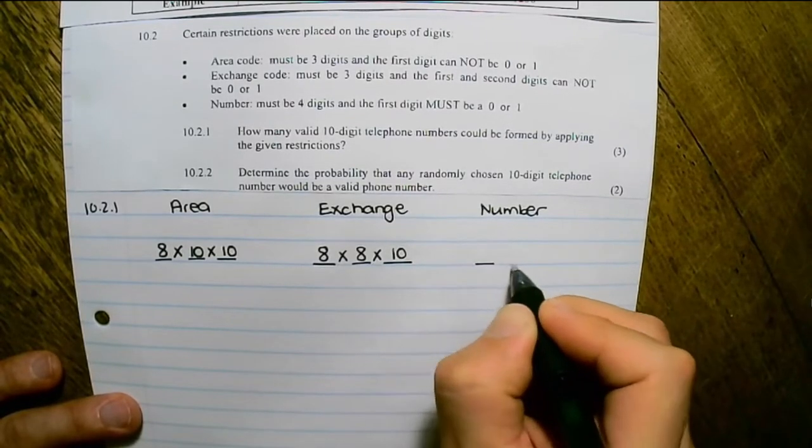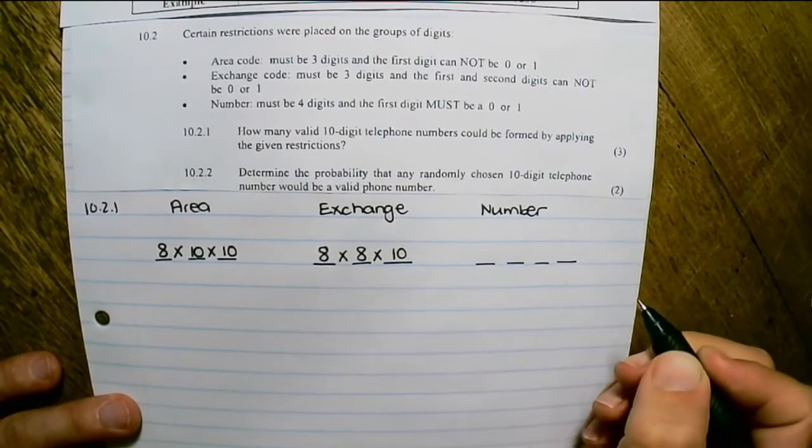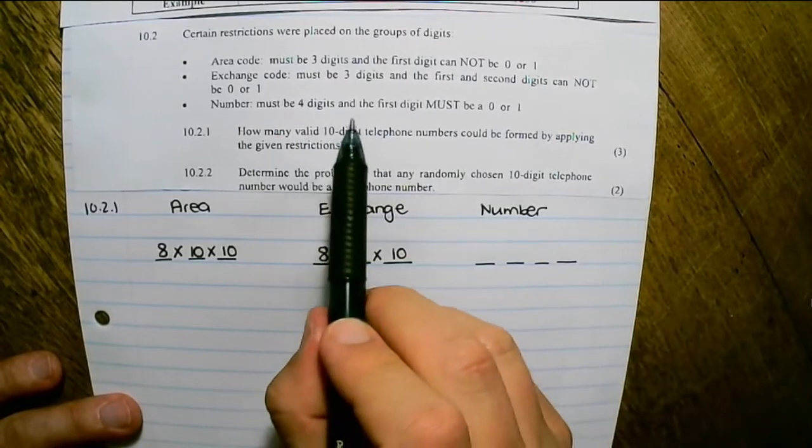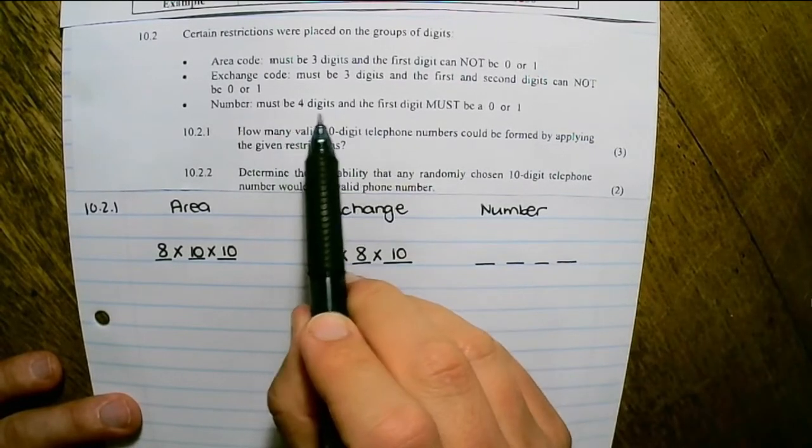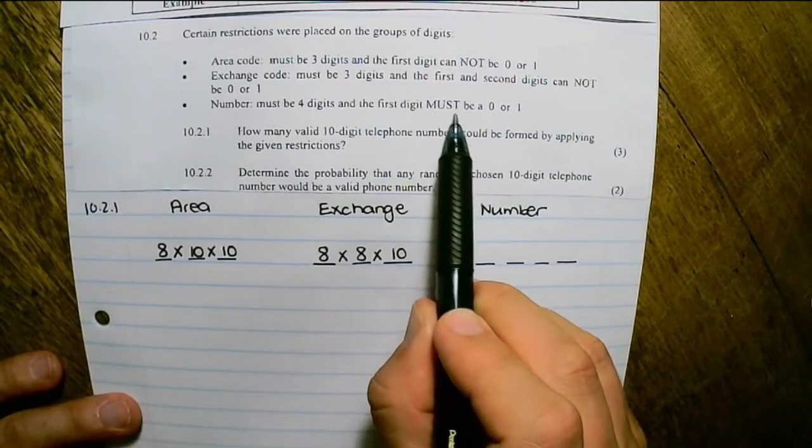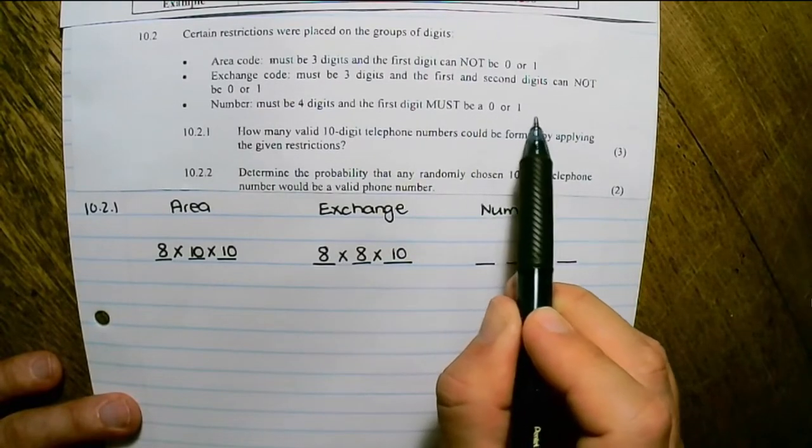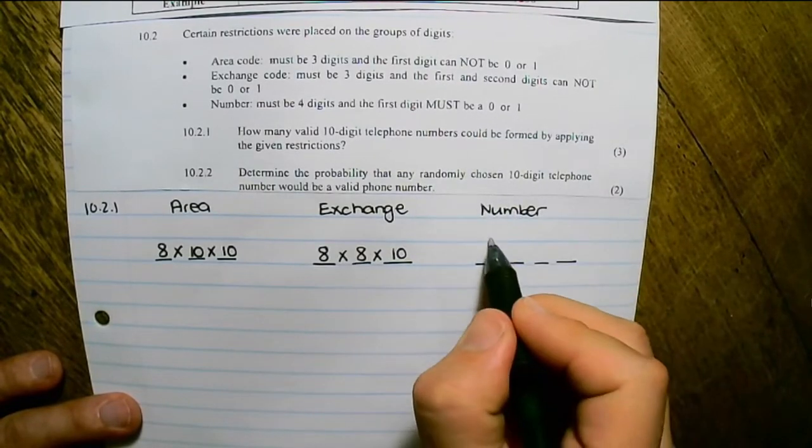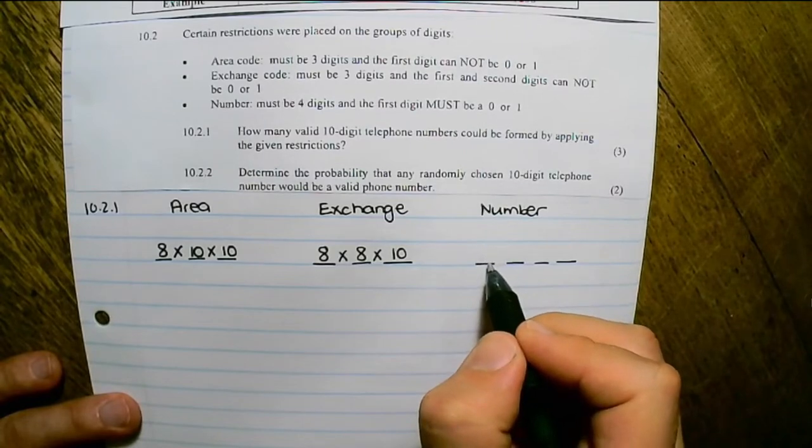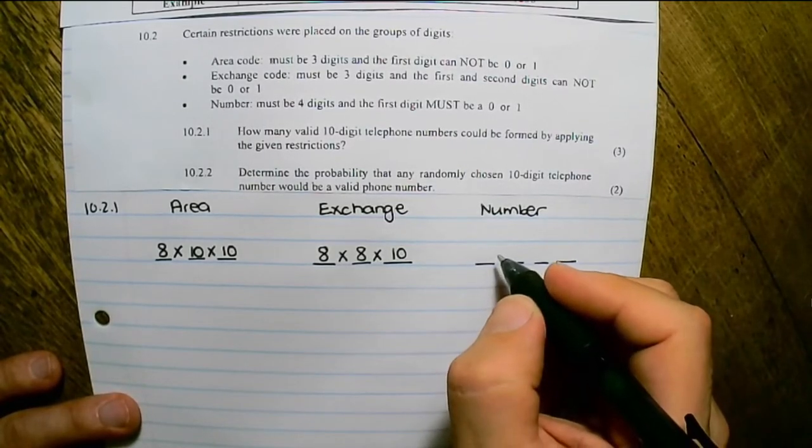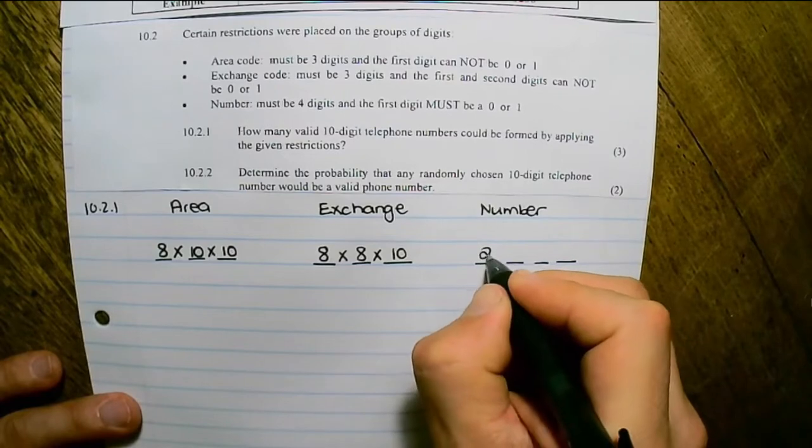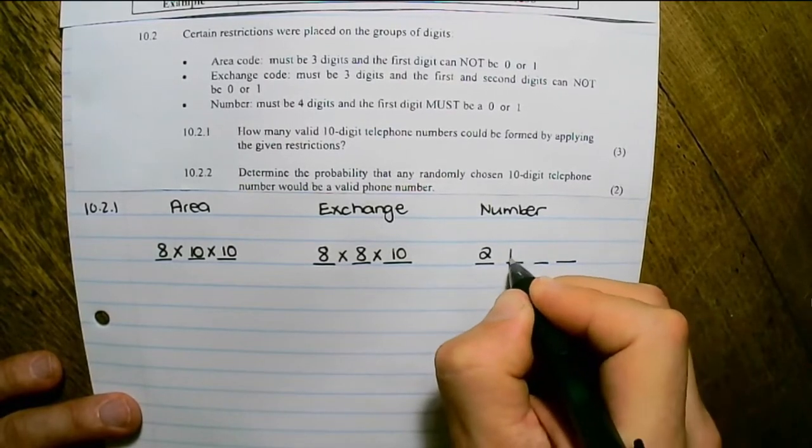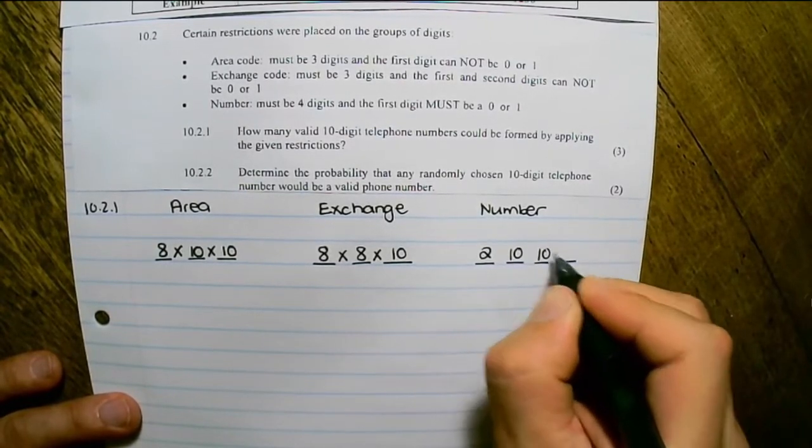The number, which consists of 4 digits, says that the first digit must be 0 or 1. So this first digit is restricted to 0 or 1—that's 2 options—and the remaining digits have 10 numbers each.